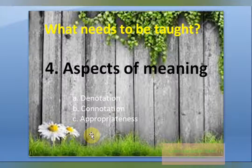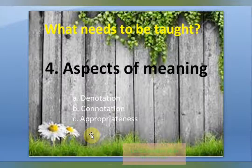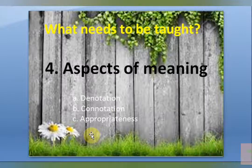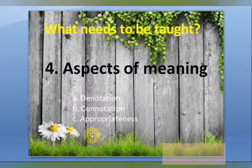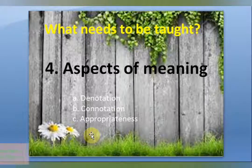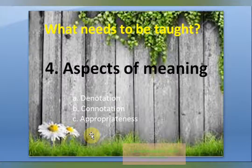The next aspect is aspects of meaning. The meaning of a word is primarily what it refers to in the real world — that is its denotation. For example, 'dog' denotes a kind of animal — more specifically, a common domestic carnivorous animal. That is denotation.